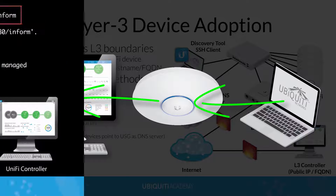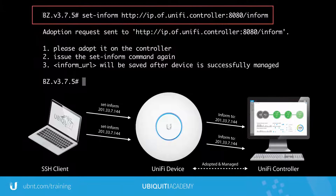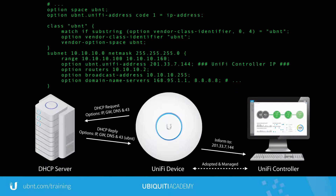Alternatively, any SSH client like Terminal or PuTTY can be used to connect to a Unify device, then update its Inform URL to the Layer 3 IP of the Unify controller via the SetInform command.